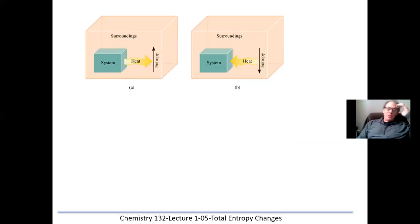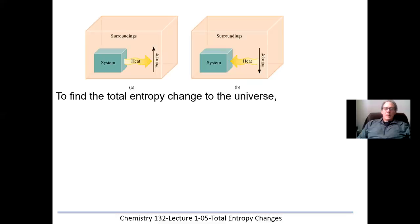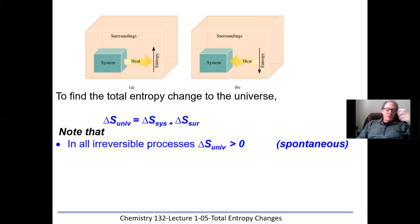Let's look at diagrams. In one diagram, it shows a system losing heat energy to the surroundings — the entropy of the surroundings is rising. In example B, there is heat leaving the surroundings and going into the system, and the entropy of the surroundings will be decreasing. So if we're going to find the total entropy change to the universe, we have to take into account the entropy change of both the system and the surroundings. In all irreversible processes, the entropy change for the universe is going to be greater than zero.